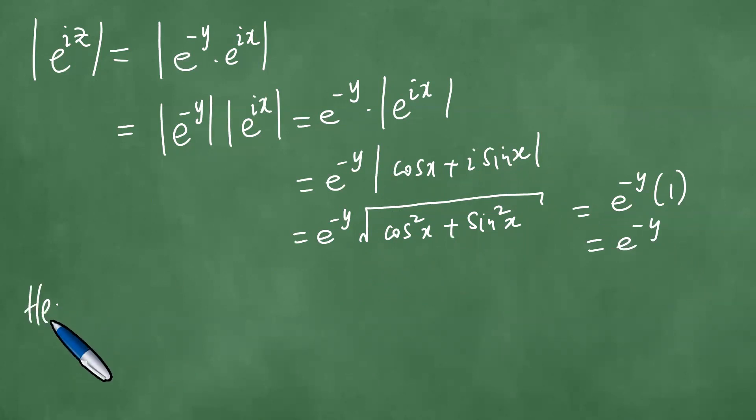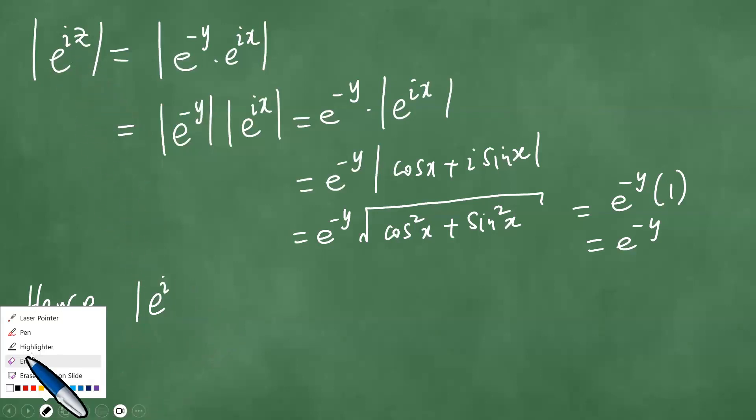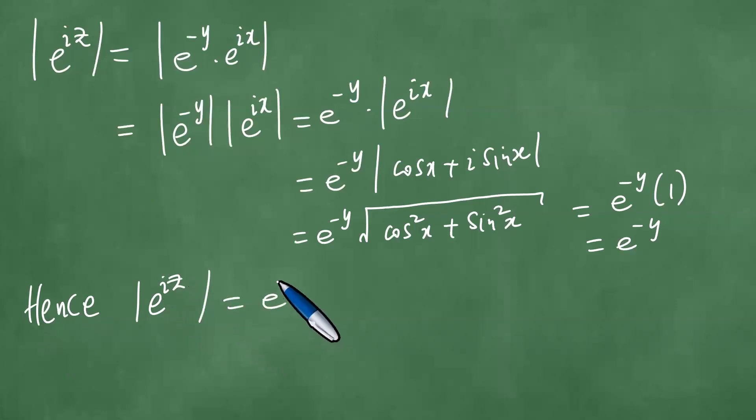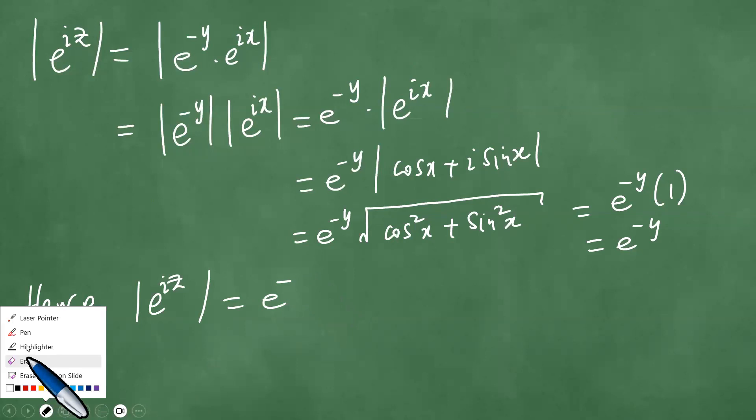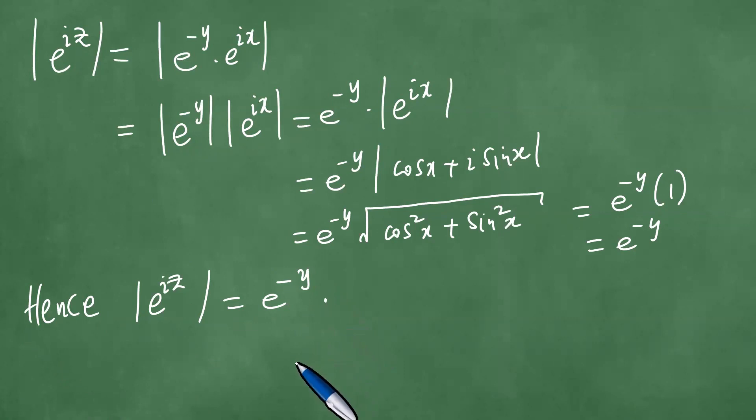And this is e to the minus y. Okay, hence e to the ix, iz, e to the iz modulus is e to the minus y. Okay, so this here is extremely important for us because that is what we get. And this is the result. So the modulus of e to the iz is e to the minus y.